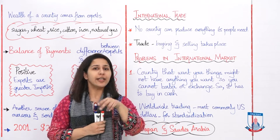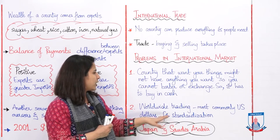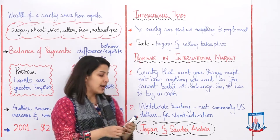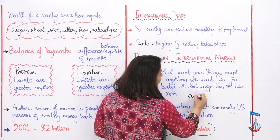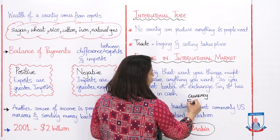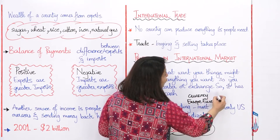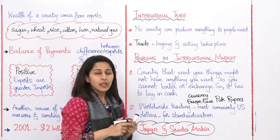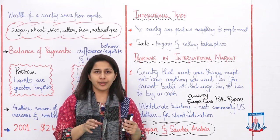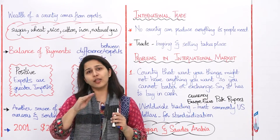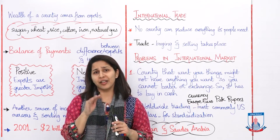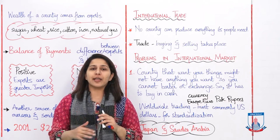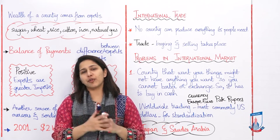Ab ye problem kyun present karta hai? That leads us to the second problem. Worldwide trading mein most commonly US dollars use hote hai. Ab jab worldwide trading ho rahi hai, toh har country ki apni currency hai — jaisi Europe ki euro hai, Pakistan ki rupees hai, Saudi ki rial hai. So every single country has their own currency. Lekin jab exchange karna padta hai, toh ye currency ka joh rate hai, woh har din badalta hai — in fact har ghante badalta hai. So isliye ye exchange difficult ho jata hai. Toh is cheez ko standardize karne ke liye across the world, US dollars mein woh trading ki jaati hai.